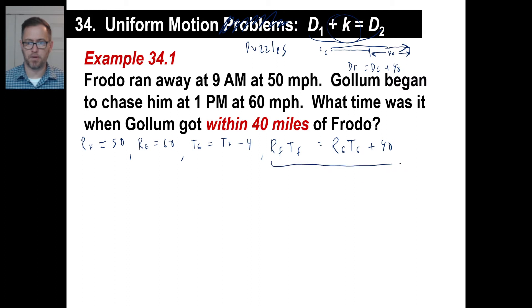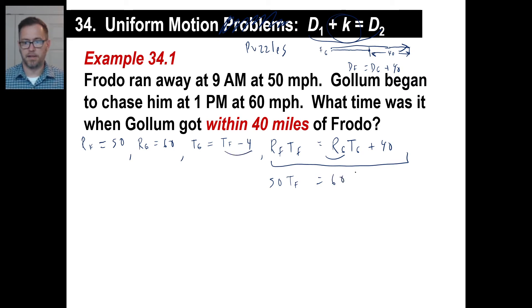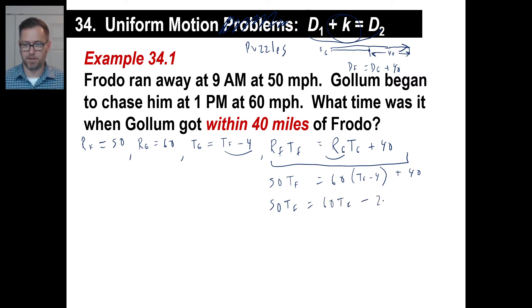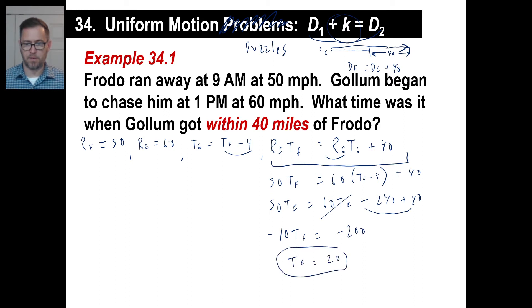Let's plug in. The rate of Frodo is 50, and the rate of Gollum is 60 times the time of Gollum, which is time of Frodo minus four — plus 40. Since everything is in terms of t sub F, we have 50 times t sub F equals 60 times (t sub F minus 4) plus 40. Solving: negative 10 t sub F equals negative 240 plus 40, which is negative 200, so t sub F equals 20. Starting at 9 a.m. plus 20 hours brings us to 5 a.m.